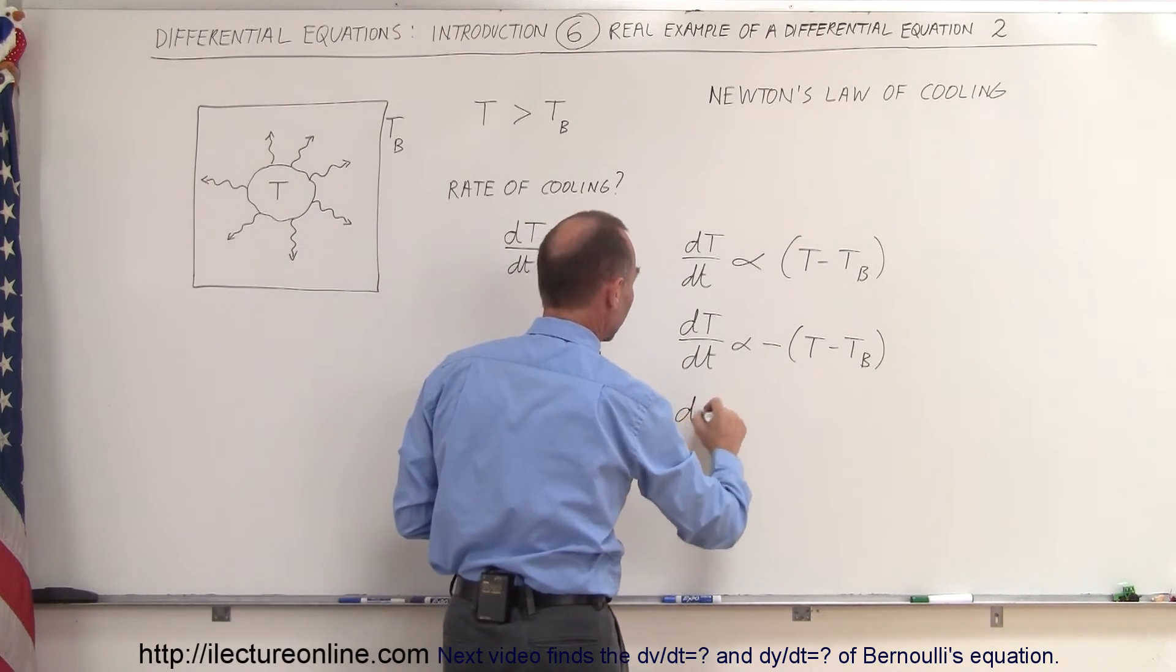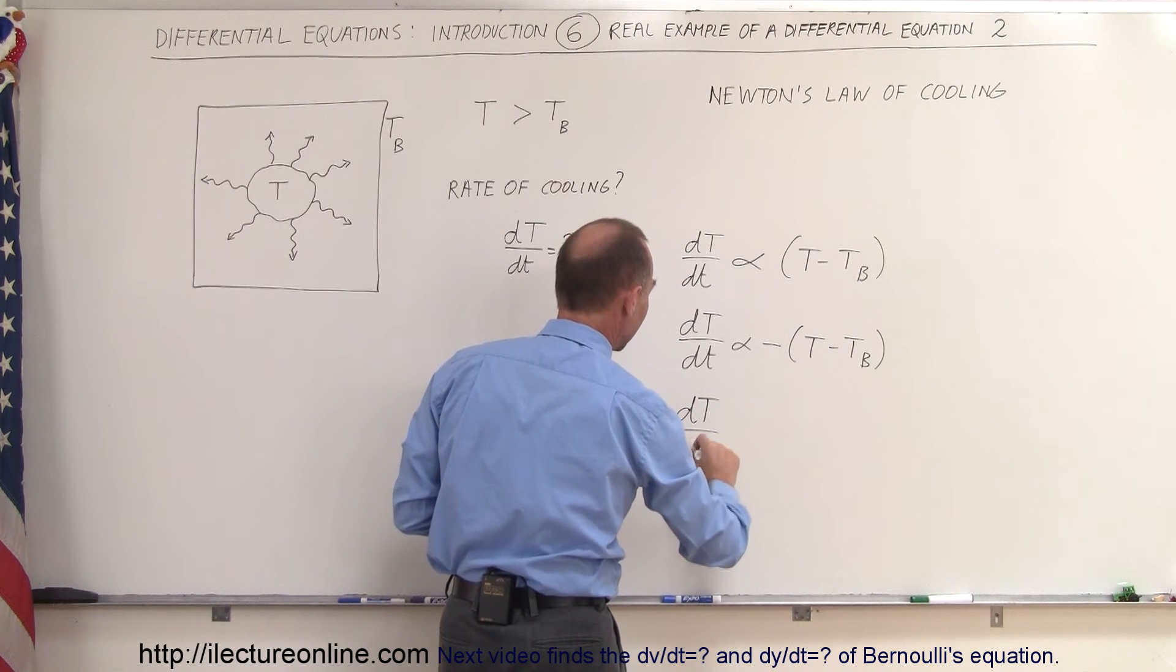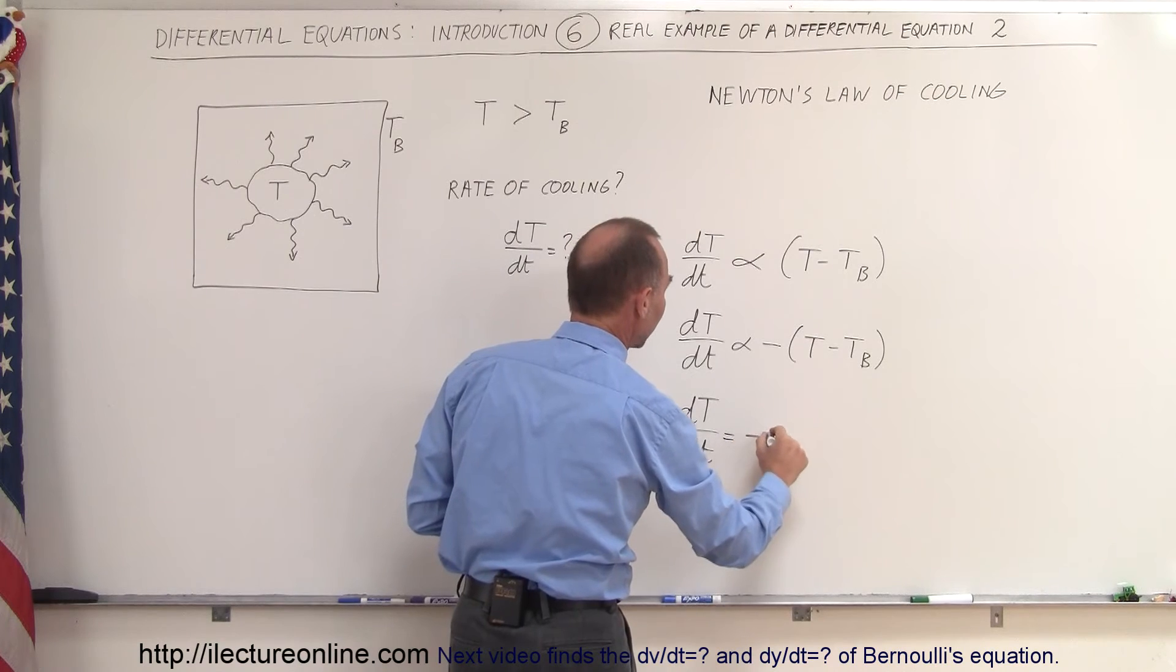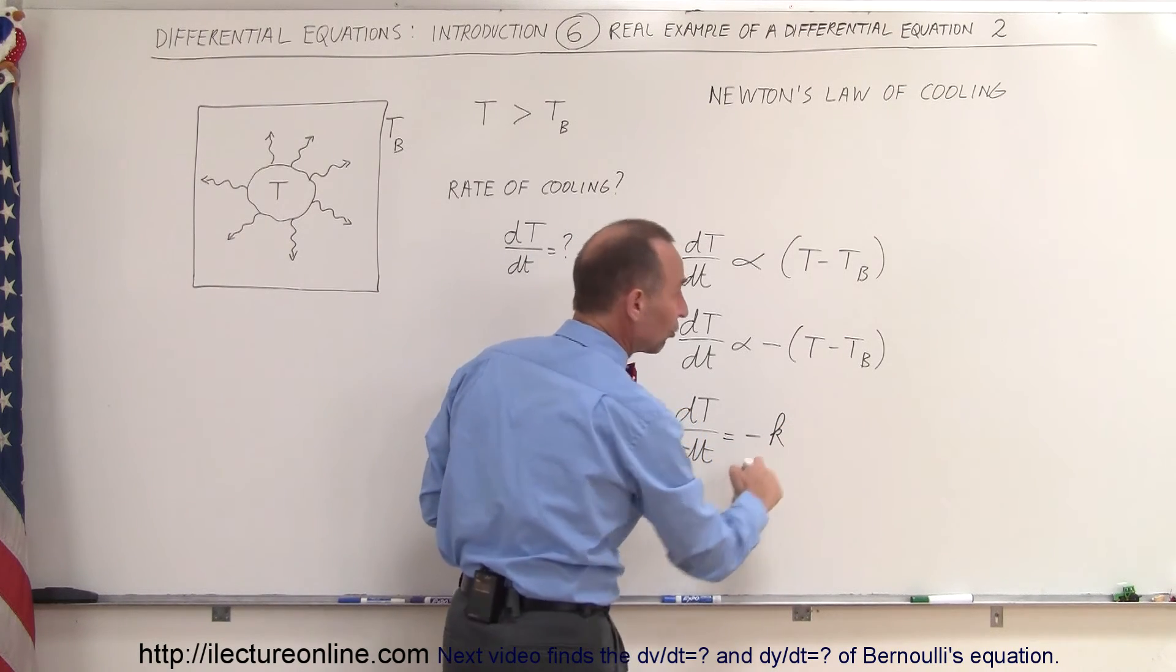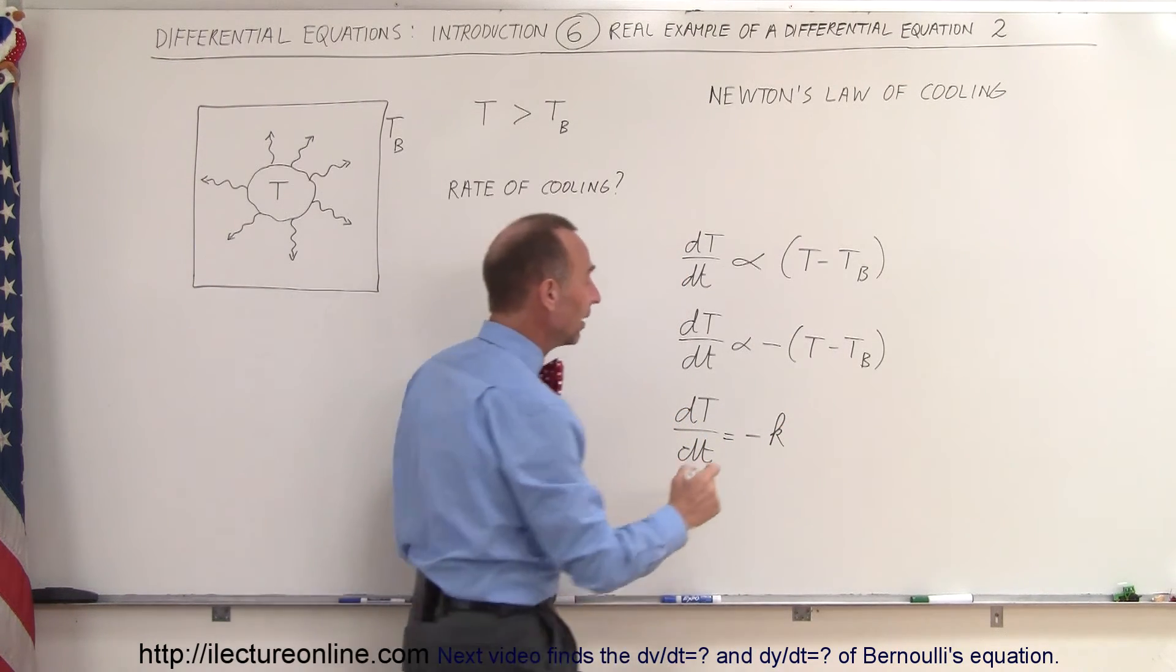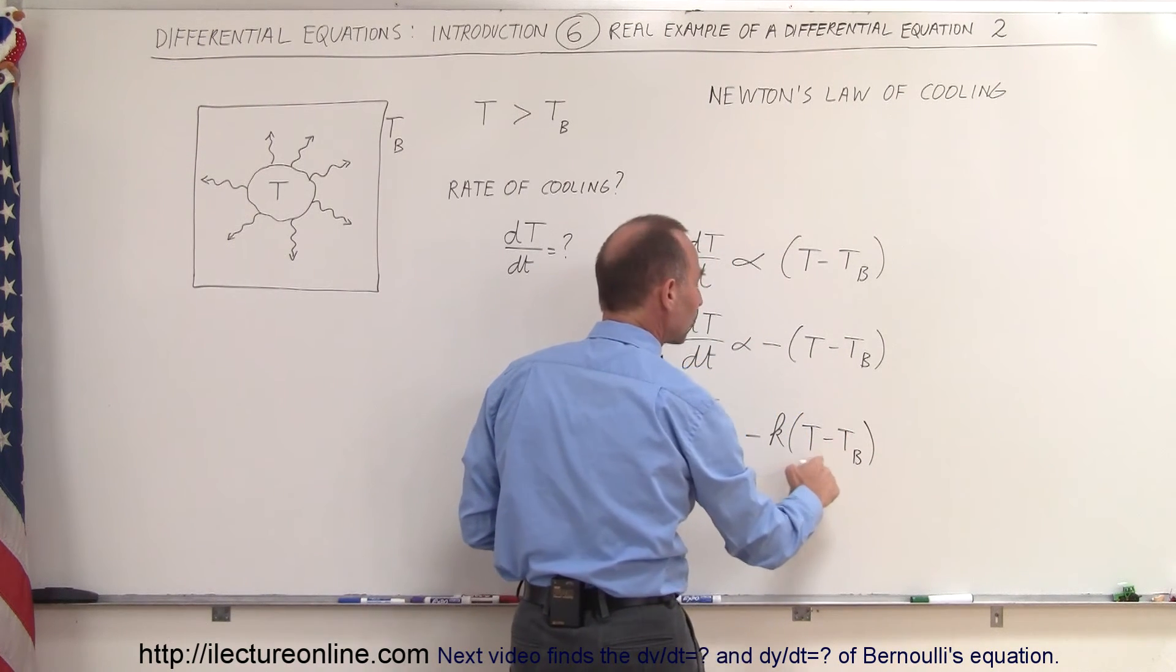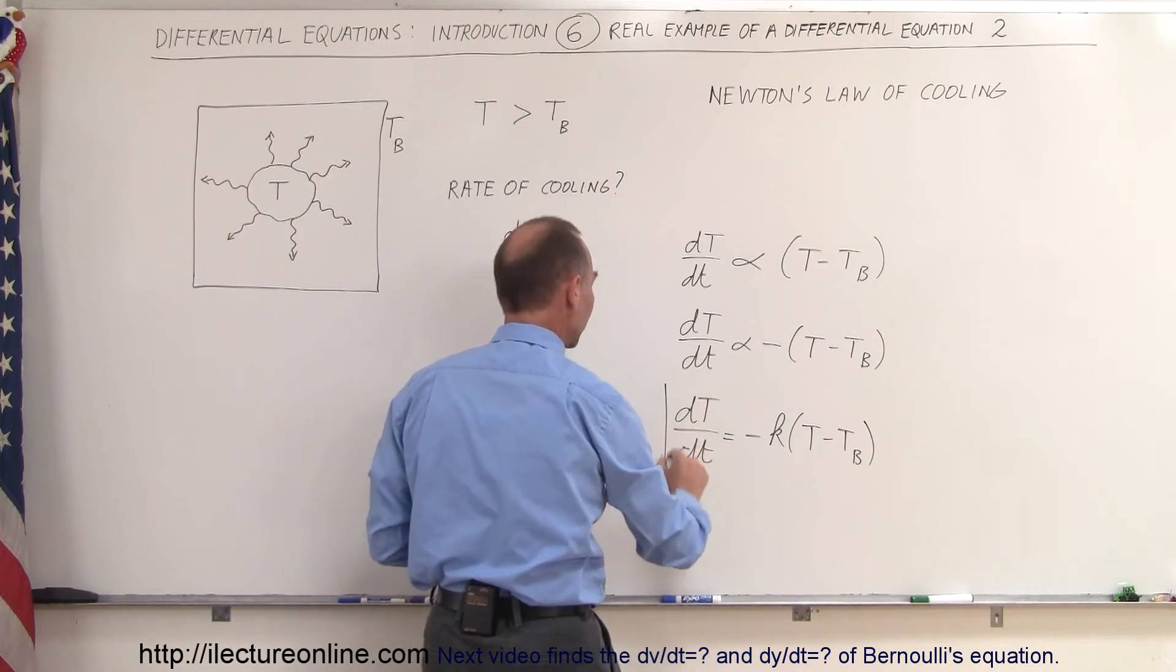And so therefore, to turn this into an equation, we can say that dT/dt, the change in the temperature with respect to time, is equal to minus some constant that has to do with the emissivity of the object times the difference T minus T sub e of the object's temperature and the environment's temperature.